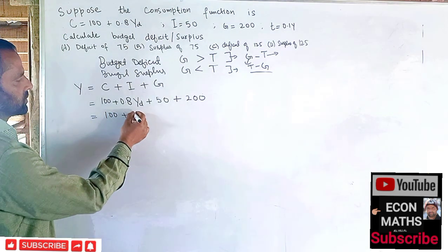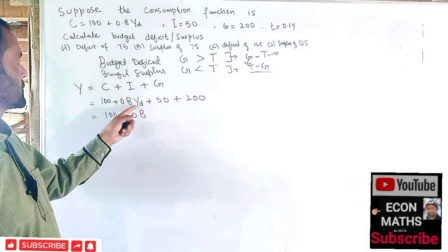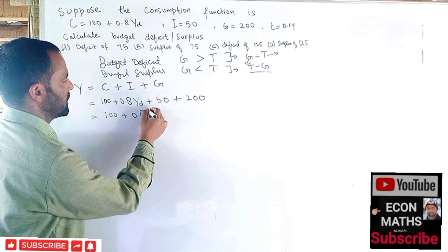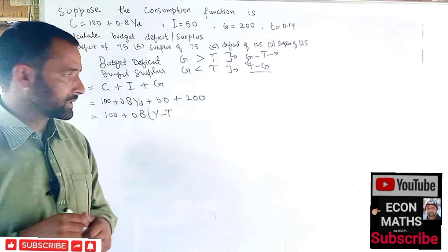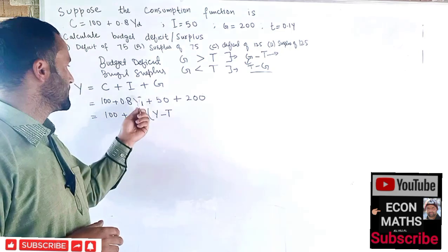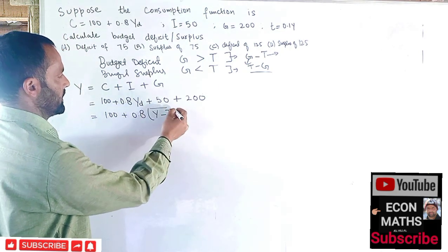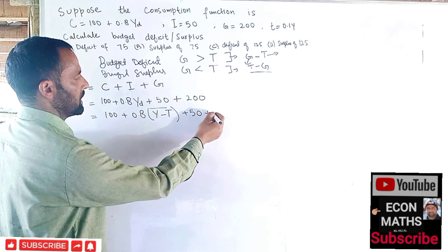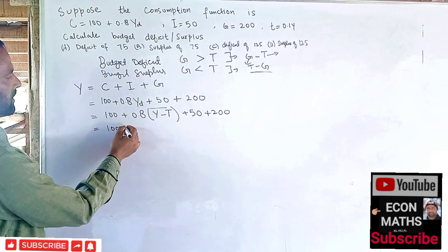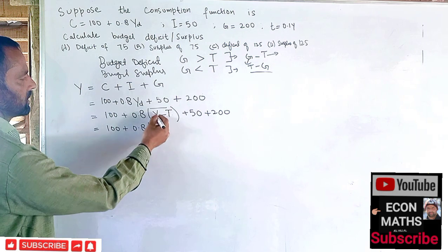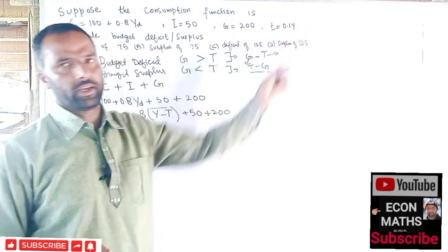Disposable income Y_d is equal to Y minus T — when we deduct tax from income we get disposable income. So we substitute: Y = 100 + 0.8(Y − T) + 50 + 200. Since T = 0.1Y, we replace T with 0.1Y, giving us Y = 100 + 0.8(Y − 0.1Y) + 250.